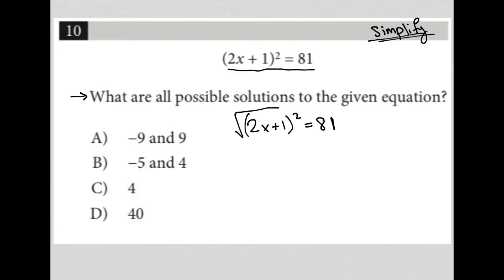So I'm going to start off by square rooting both sides. And that makes this become just 2x plus 1 because the square root of anything squared cancels out the square and the square root. And then the square root of 81 is going to be equal to plus or minus 9.